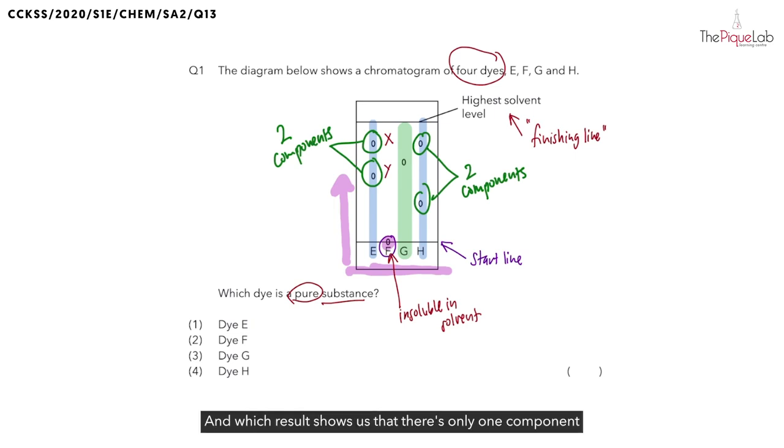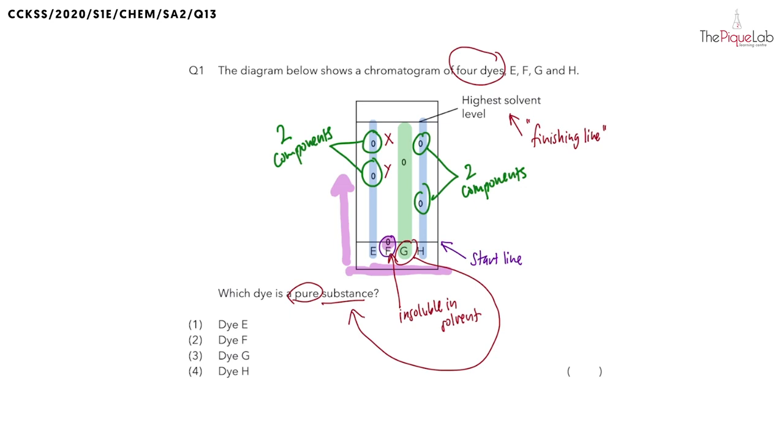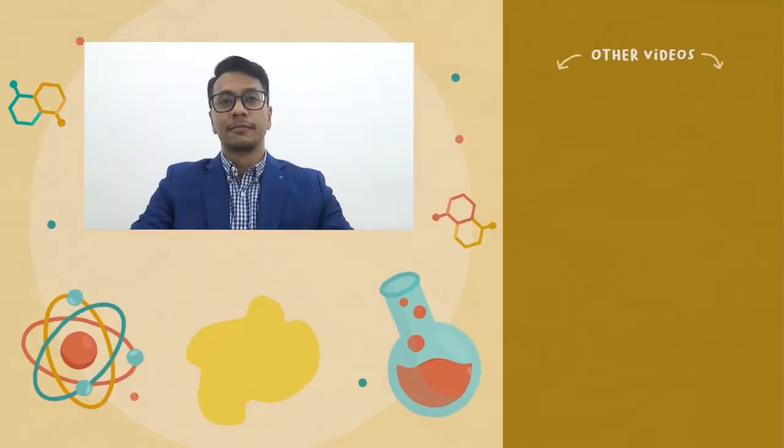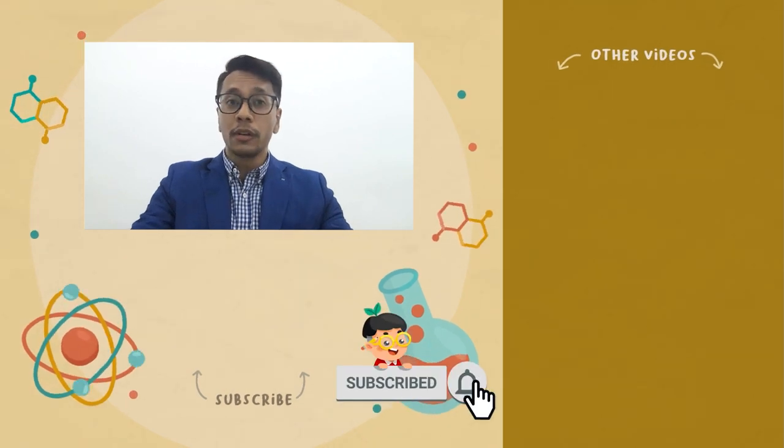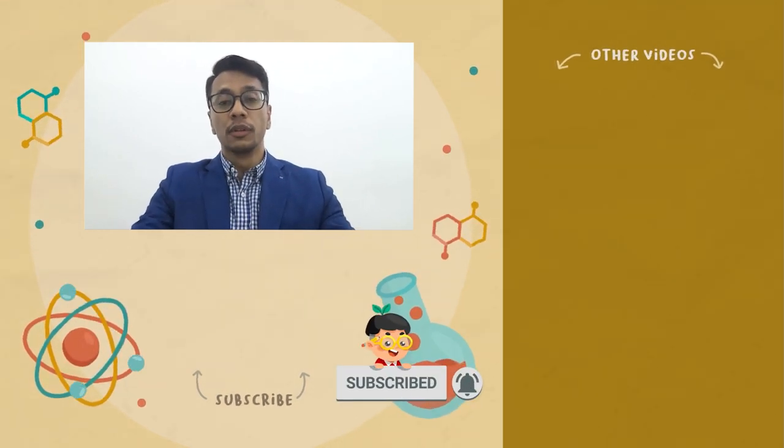And which result shows us that there's only one component in the dye? We have dye G, giving us the answer as option 3. Thank you for watching and I hope you enjoyed this video. If you found this video useful, do give us a thumbs up.